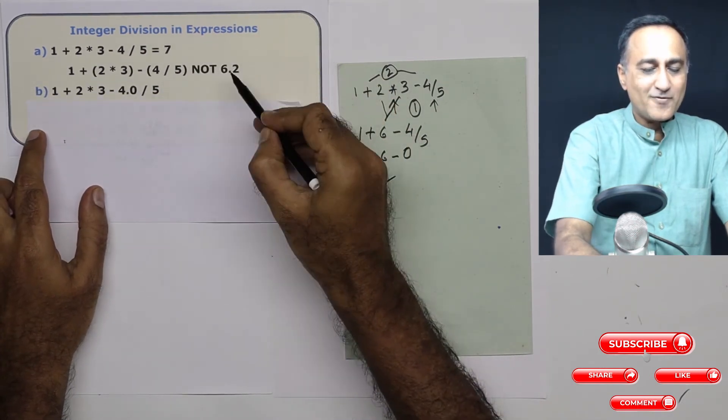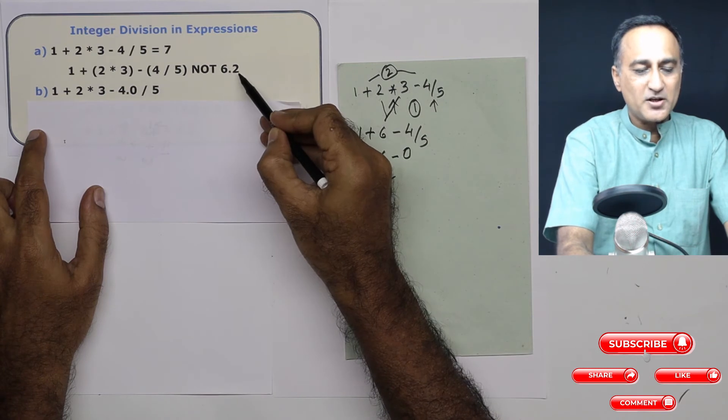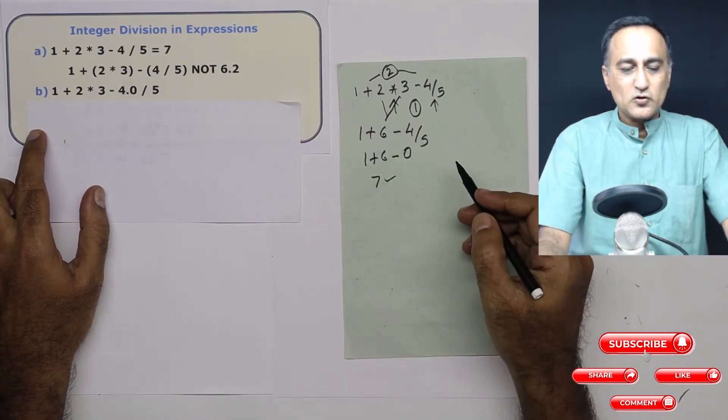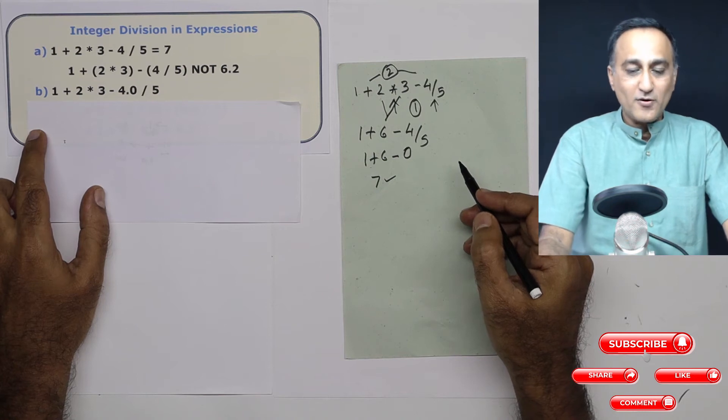So don't assume that 4 upon 5 is going to be 6.2 because of that division. 4 by 5 is not going to give you a fractional remainder.